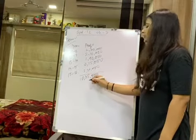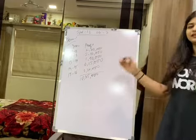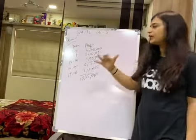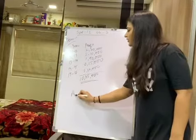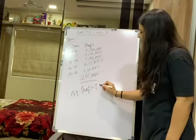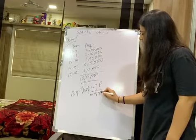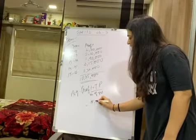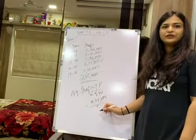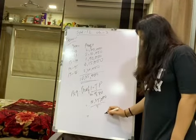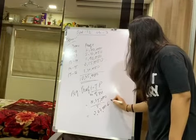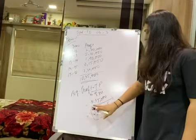Do the calculation yourself. Average profit is equal to total profit upon number of years. Total profit is 10 lakh 35,000. Number of years is five. So average profit equals 10,35,000 divided by 5, which gives us 2 lakh 7,000 rupees. That is our average profit.